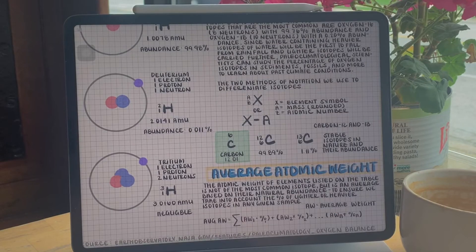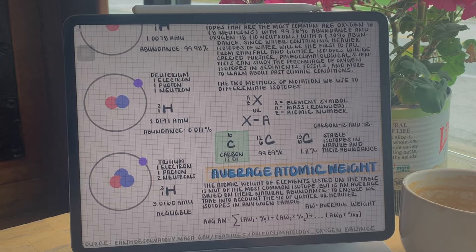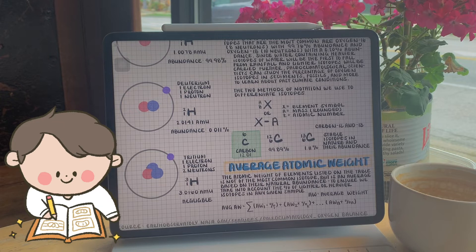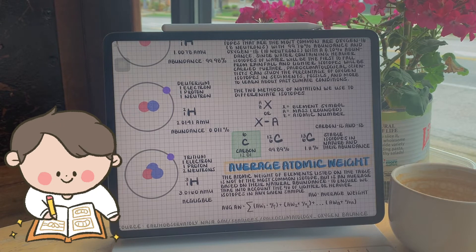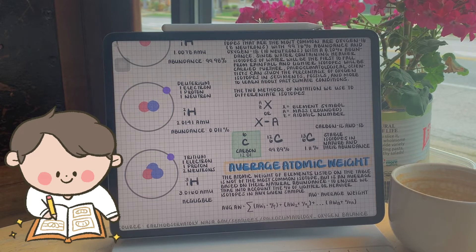There are two different methods we use as notation for isotopes. The first one is the most common, so let's analyze that one first. We have X. X is representing the elemental symbol, which is listed on the periodic table, which we stated was important to memorize.